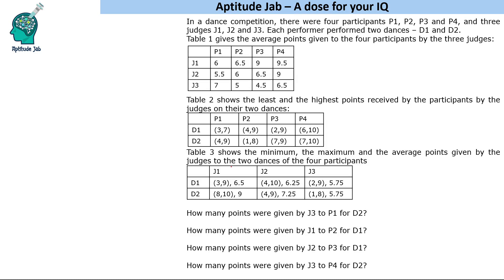Table three shows the minimum, maximum, and average points given by the judges to the two dances of the four participants. J1 gave a minimum of 3 points and a maximum of 9 points, and on average gave 6.5 points to dance one. J3 gave a minimum of 1 and a maximum of 8 points, with an average of 5.75 points to dance two. So we are given the relation between judge and participant, between dance and participant, and between judge and dance.